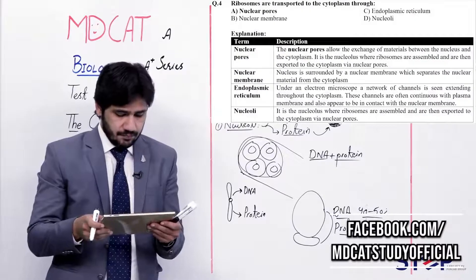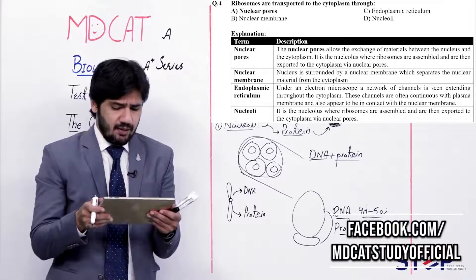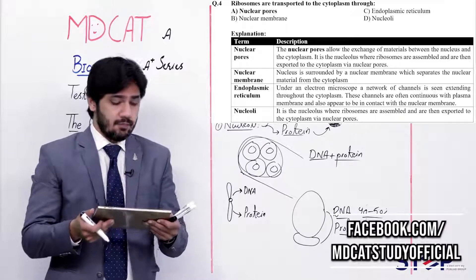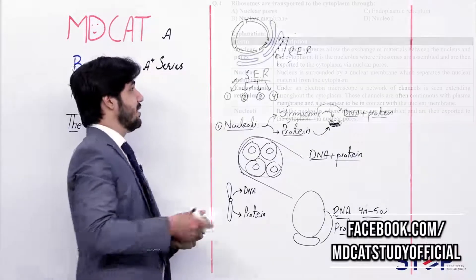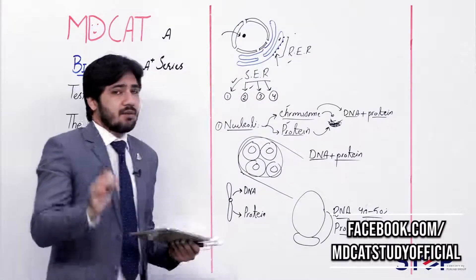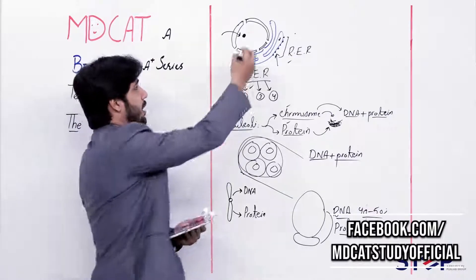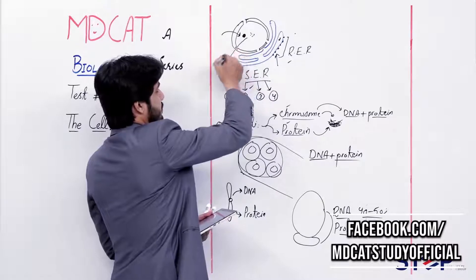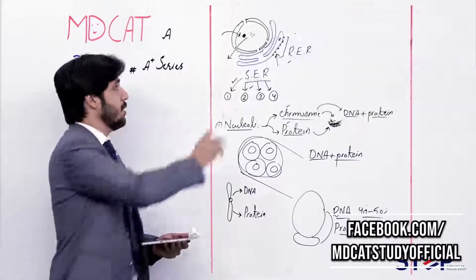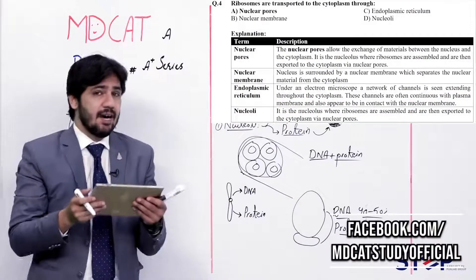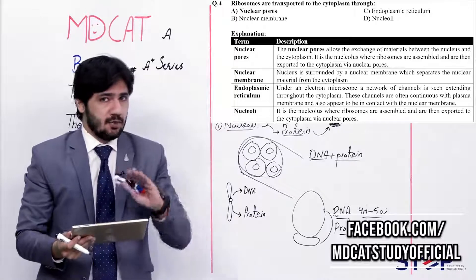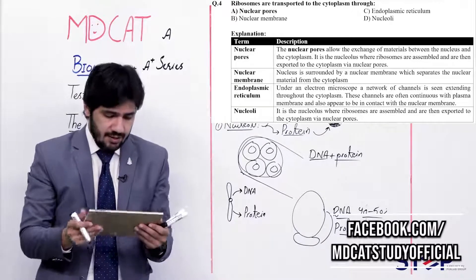Ribosomes are not transported through the nuclear membrane or endoplasmic reticulum. Nucleoli is where they are made, not where they are transported. So delta is also wrong; the correct answer remains alpha. Question 5: The nucleus occupies a central position in (alpha) bacterial cells, (beta) animal cells, (charlie) plant cells, (delta) prokaryotic cells. In animal cells, the nucleus is at the center. In plant cells, the large central vacuole occupies the center. Bacterial and prokaryotic cells have only a nuclear region, not a true nucleus. So the right answer is beta — animal cells.